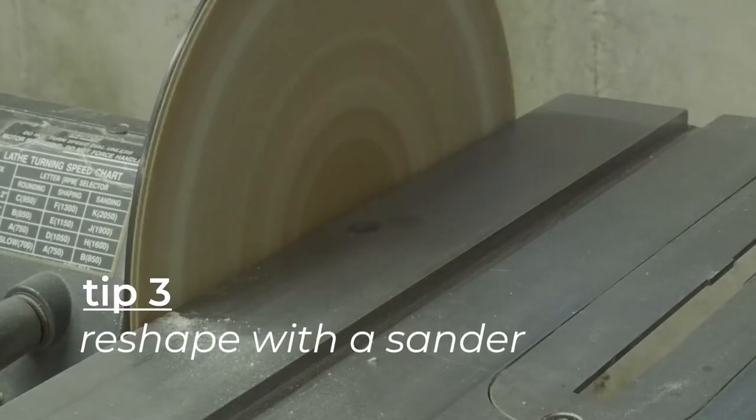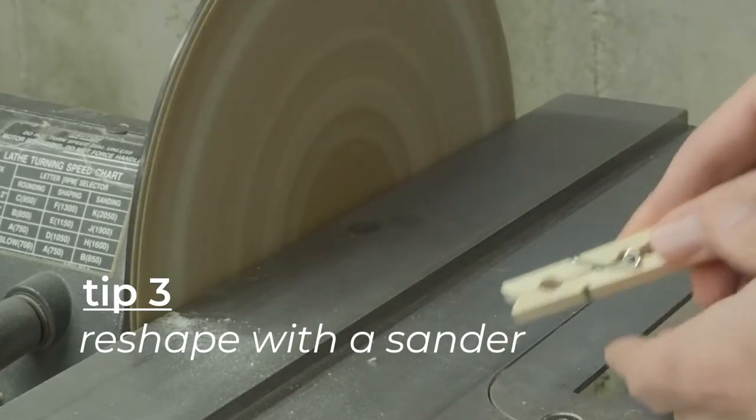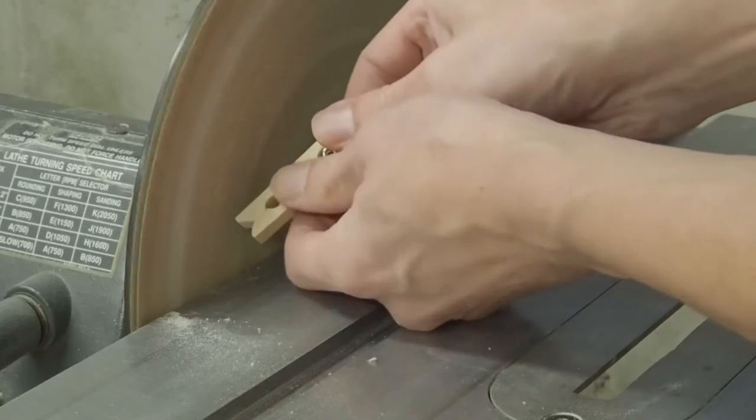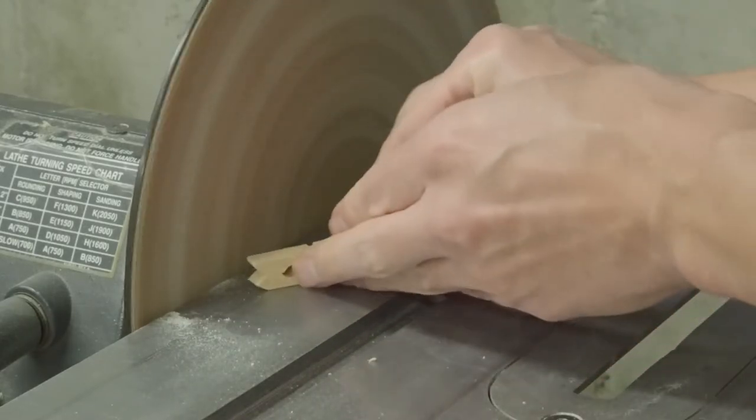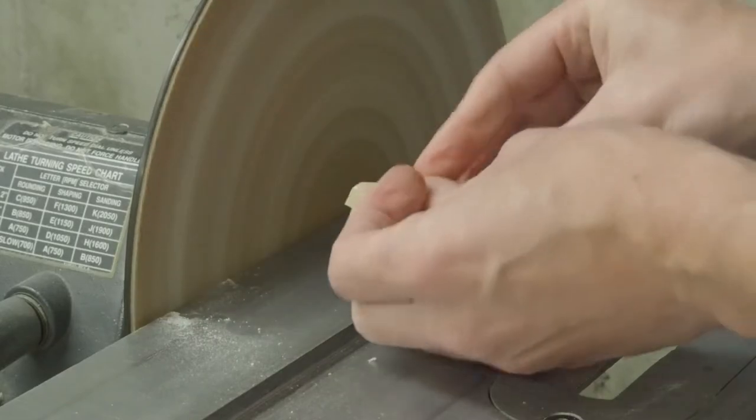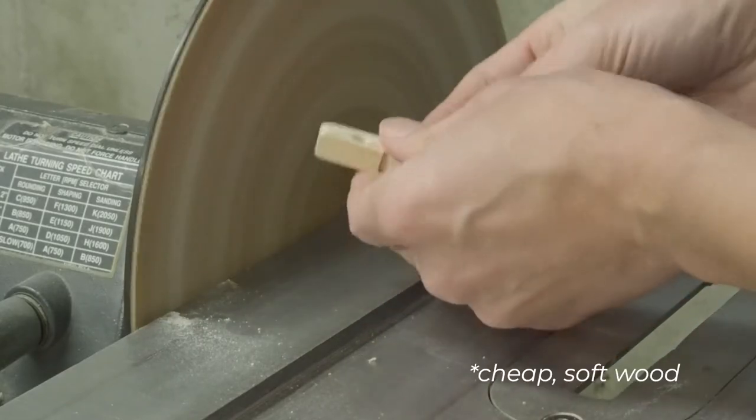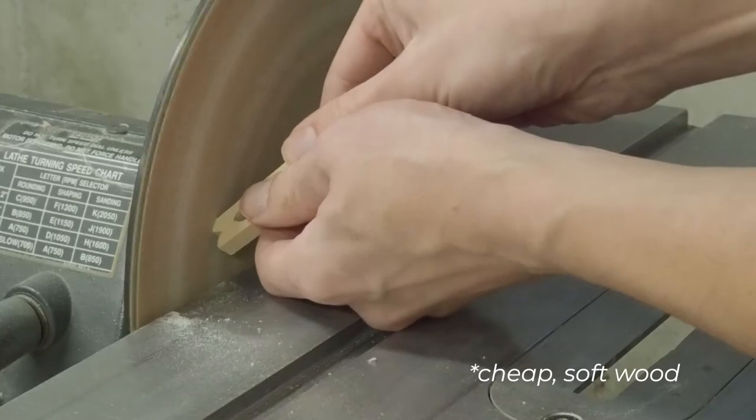Tip three: reshape the clothespin with a sander. Way quicker than cutting it and hand sanding it, and the results are honestly way nicer. Clothespins are usually made out of cheap wood, at least any that I've got laying around.